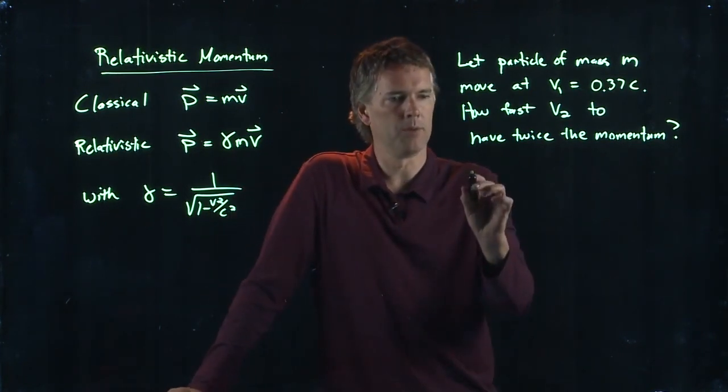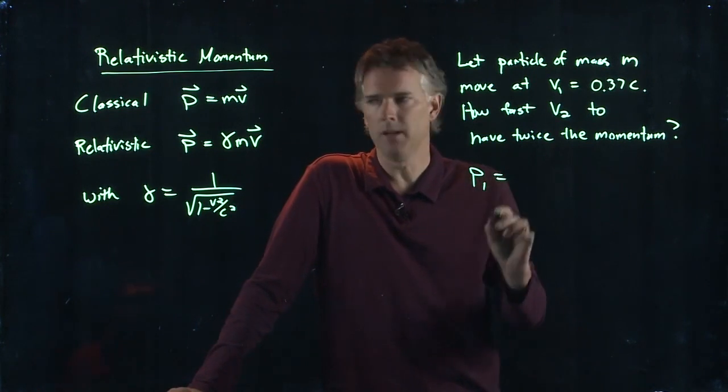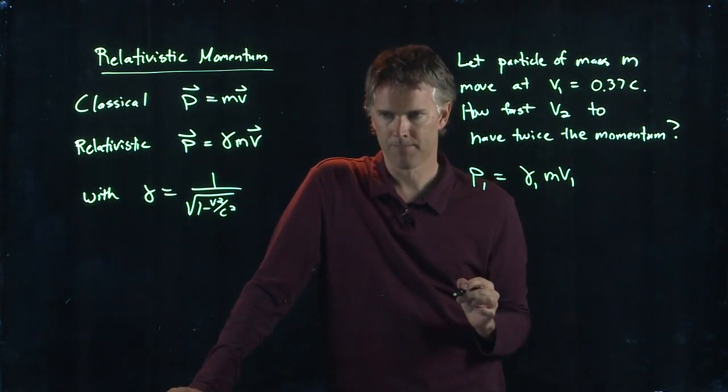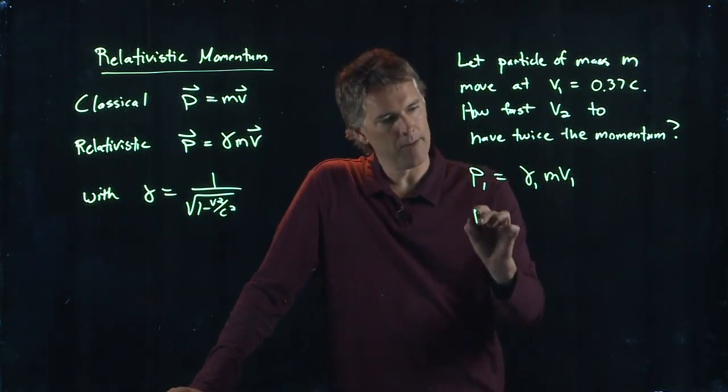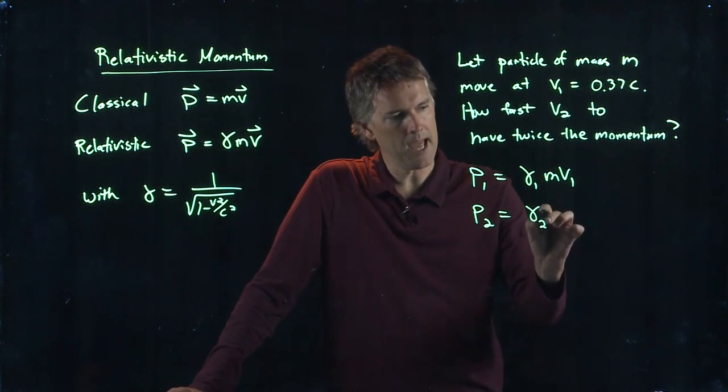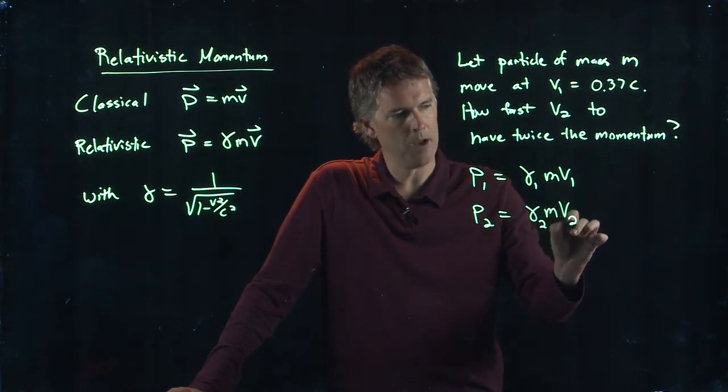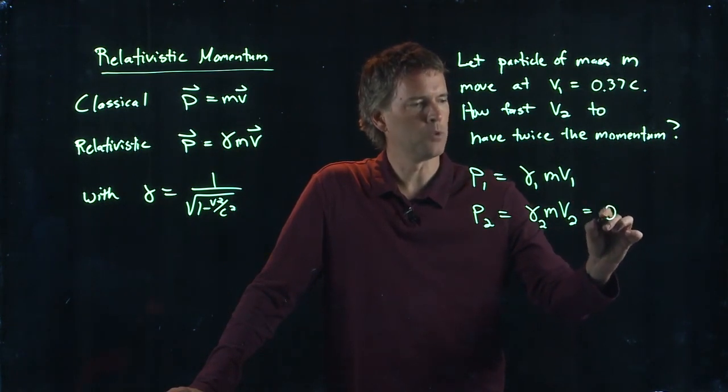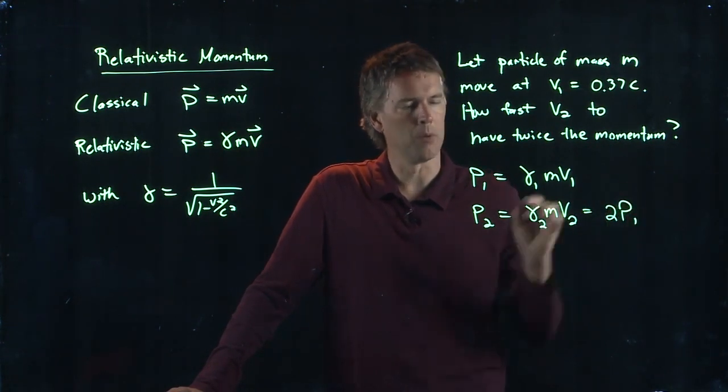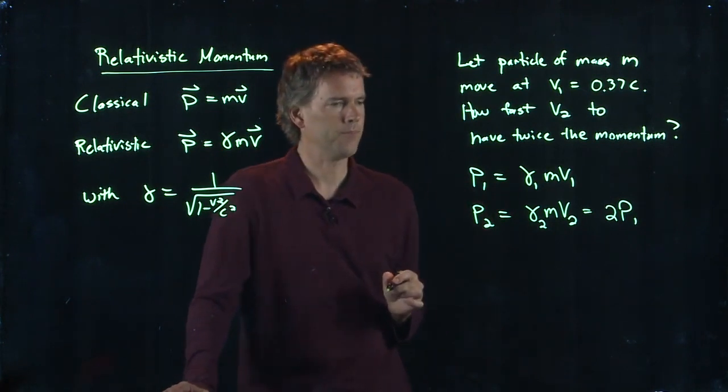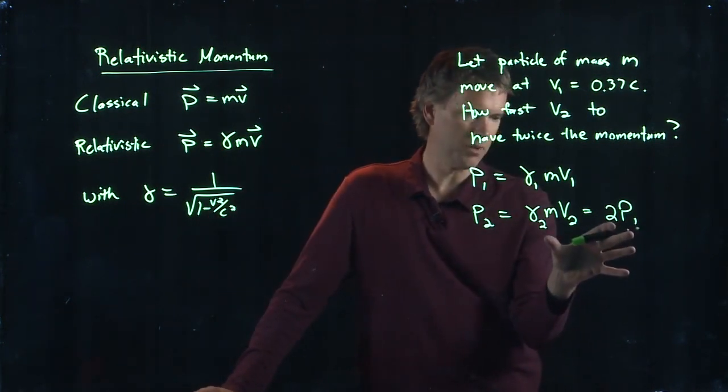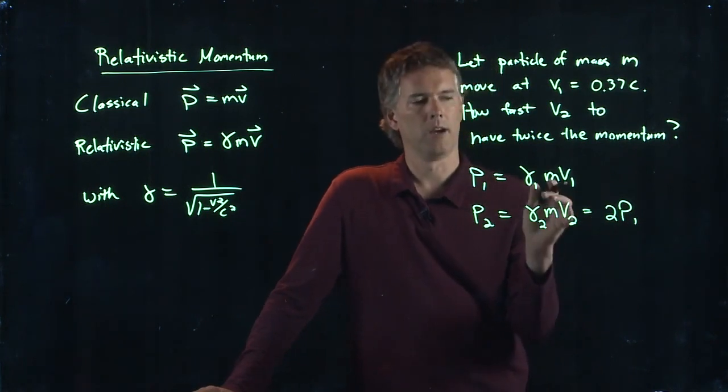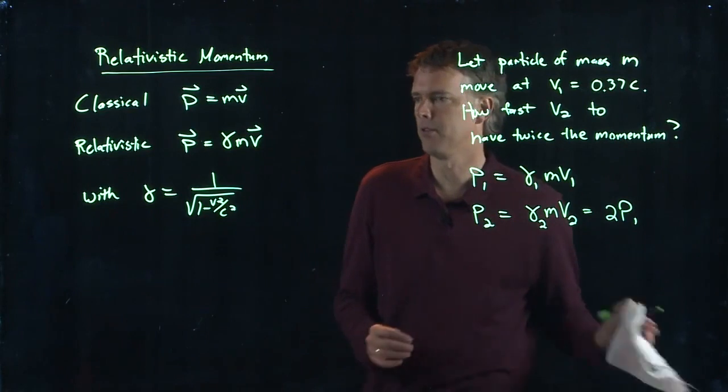All right, so we have two relationships. We have p1 is equal to gamma 1 m v1. And then we have p2, which is equal to gamma 2 m v2. And we know that that is going to be twice the initial momentum, p1. So now we have this relationship here and we need to solve for v2.